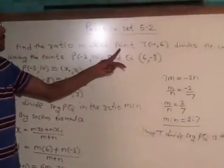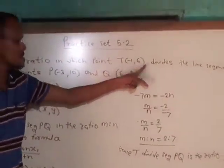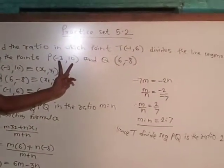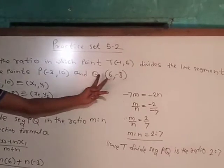Find the ratio in which point T(-1, 6) divides the line segment joining the points P(-3, 10) and Q(6, -8).